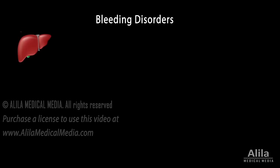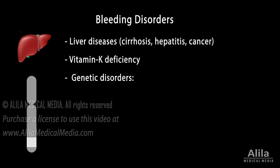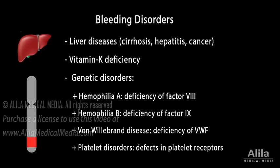Because most clotting factors are produced in the liver, and their production requires vitamin K, liver diseases such as cirrhosis and vitamin K deficiency may cause excessive bleeding. The main bleeding disorders, however, are inherited. These conditions are caused by gene mutations that lead to deficiency of a certain clotting factor. They are usually treated with replacement therapy, using purified factors produced by recombinant technology, or frozen platelets.